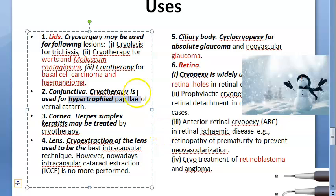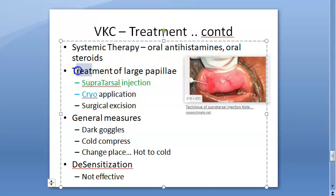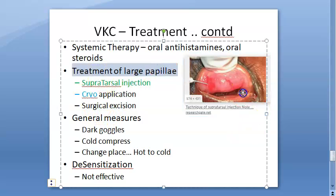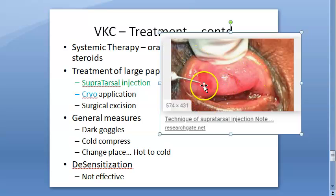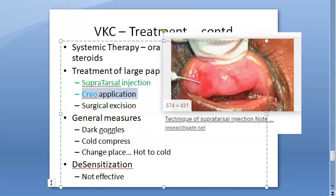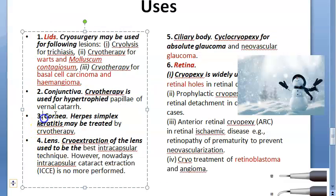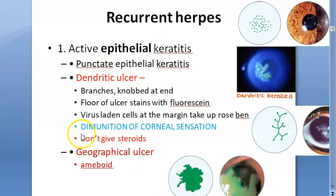In vernal keratoconjunctivitis, when there are hypertrophied papillae that cannot be reduced in size, cryotherapy application is used. Treatment options include supratarsal injection, cryo application, or surgical excision for large papillae that don't subside. For the cornea, herpes simplex keratitis may be treated by cryotherapy.